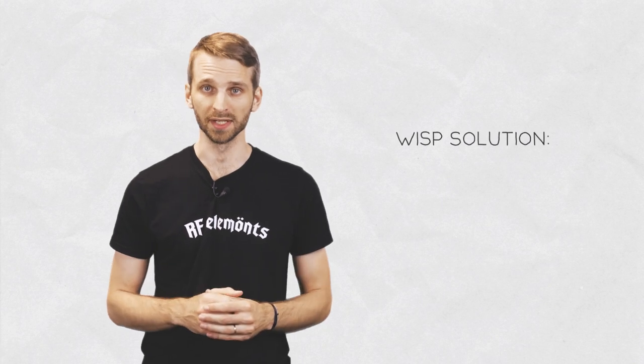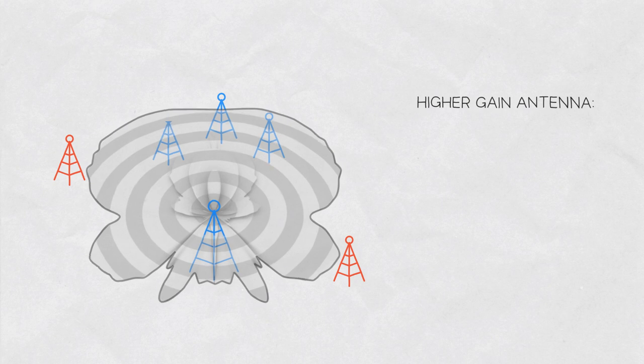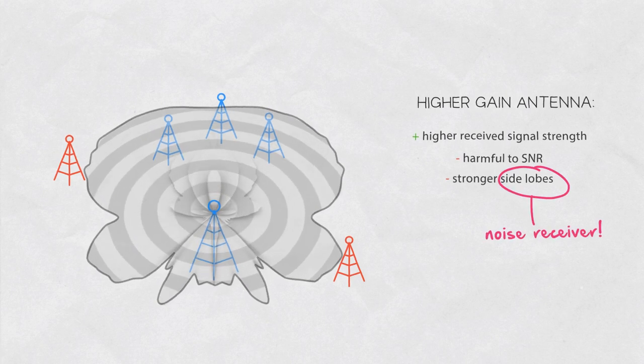A frequent misunderstanding among WISPs is that the solution to the interference is to use the antenna with higher gain. Although higher gain antenna will increase the received signal strength, it can be harmful to the SNR because of the side lobes which decide how much added noise your radio sees.